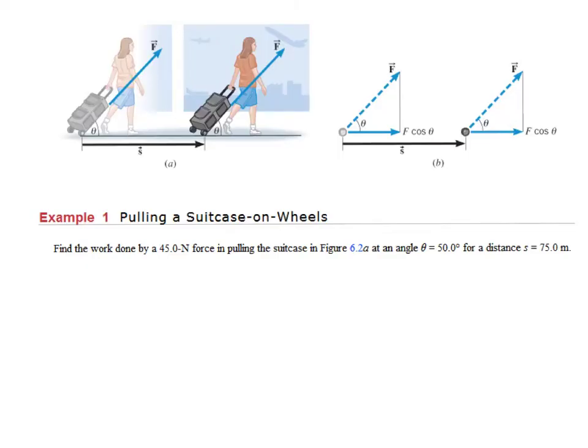So in this particular example, there's a woman applying a force to a suitcase, one of these suitcases on wheels. And the suitcase is traveling through a distance, but the force that she's applying isn't in this direction. The force she's applying is at an angle. So the work done by a 45-newton force pulling on this suitcase at an angle of 50 degrees for a distance of 75 meters, we're going to apply the equation that we saw on the last slide, that work equals force times distance times the cosine of the angle.